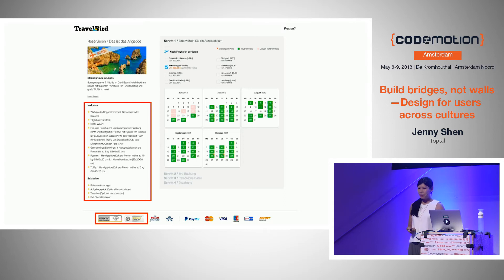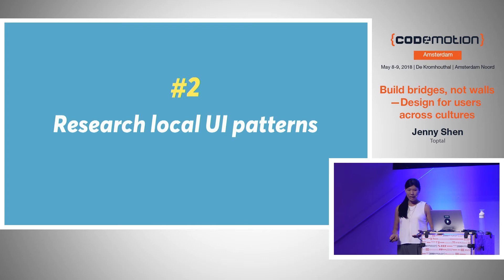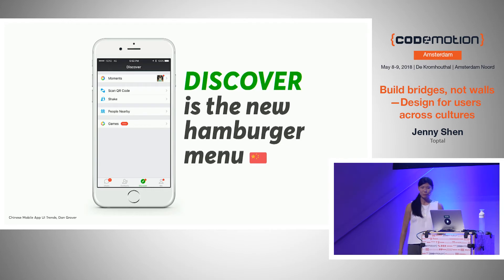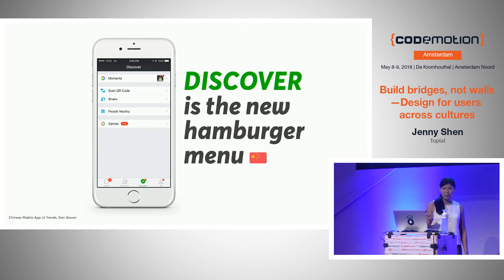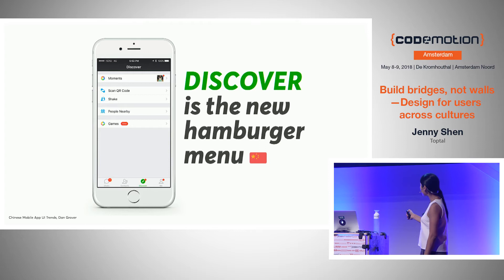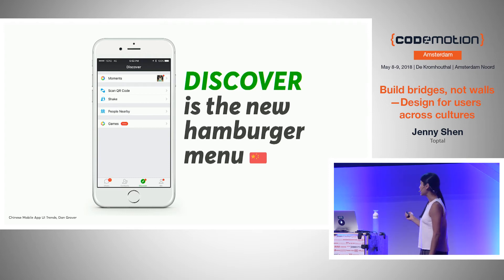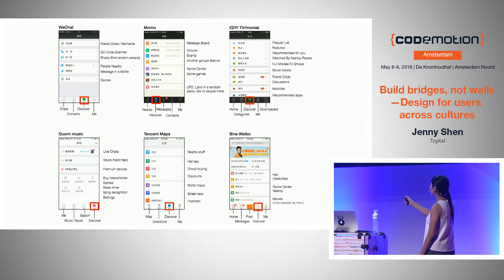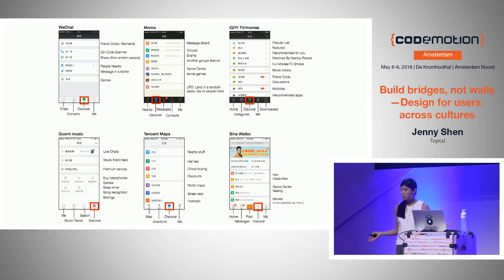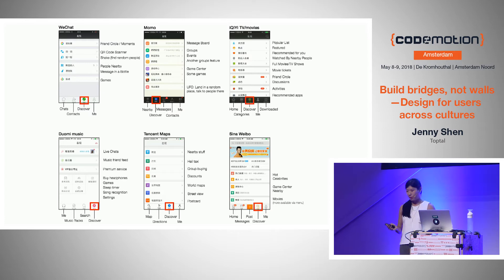Aside from learning about local culture, you can also research local UI patterns. When you want to present users with more information, the common method we see now is the hamburger menu or the three dots that say 'more options.' But did you know that in China the hamburger menu doesn't really exist? Instead, you have a 'discover' menu — a button with a compass icon that says 'discover, here are more options.' Dan Grover, who used to work at WeChat, studied many Chinese apps and found that this pattern appeared again and again — a compass icon that says 'discover' is the norm for secondary options.